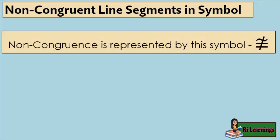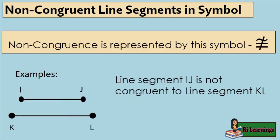Non-congruence is represented by this symbol. It is the same as the congruence symbol but with a crossed-out or slashed sign in the center. Example: Line segment IJ is not congruent to line segment KL. We can write it in symbol in this way — line segment IJ is not congruent to line segment KL.